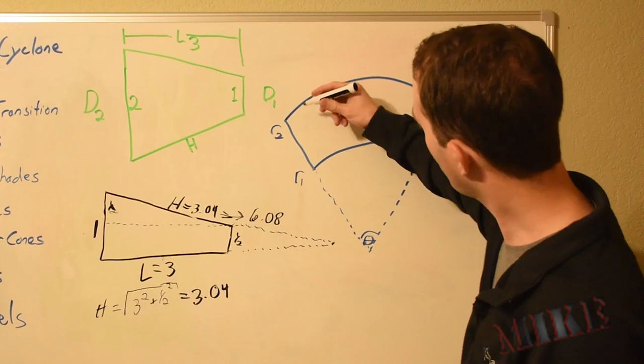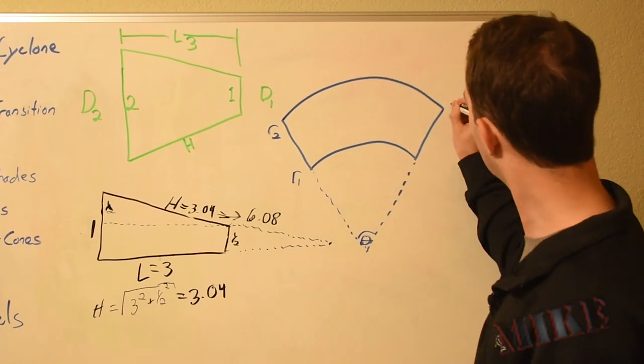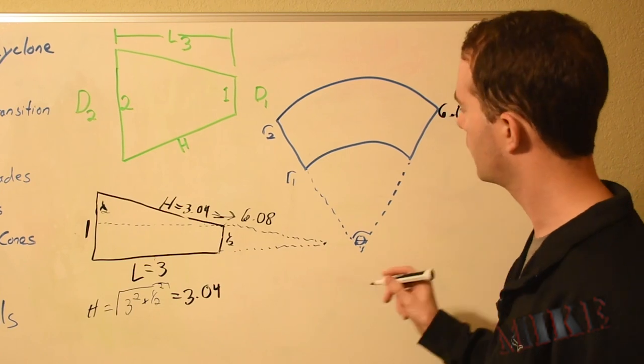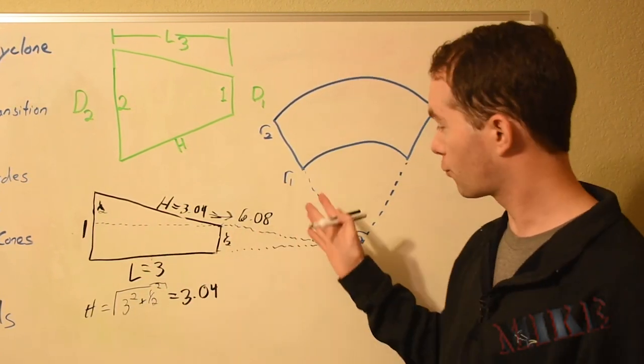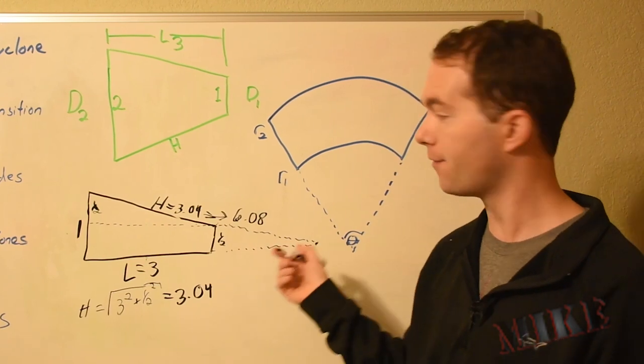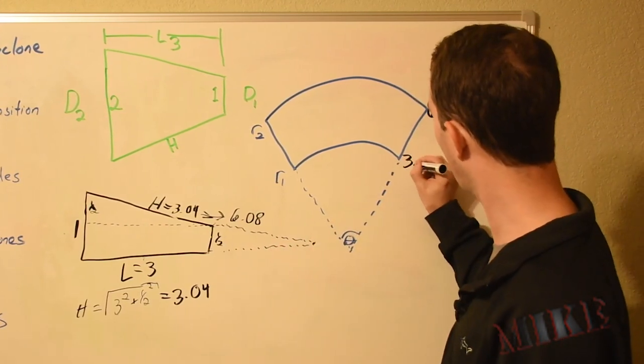So there's one of our outputs, R2: 6.08. Well, that's really easy then to get R1 because in our special case here, it just happened to be half of that. So this is 3.04.